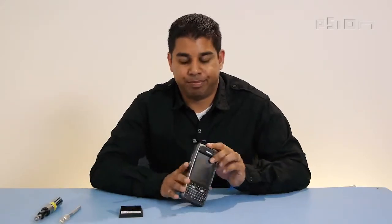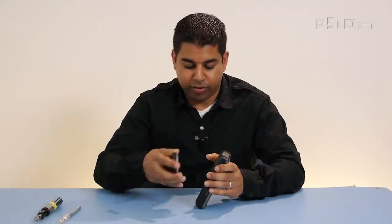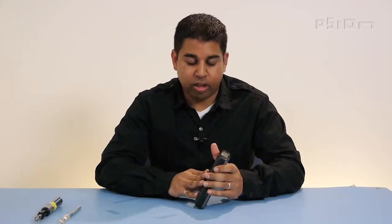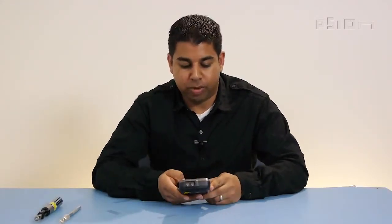This procedure we just went through is applicable for replacing any keyboard variant on the EP10. Once you've completed, all you need to do is install the battery and turn on the terminal. The terminal will automatically recognize which keyboard variant is installed. No other configuration is required.